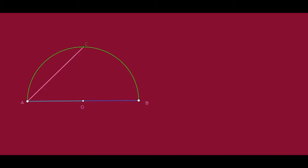A and B are the end points of the diameter, and C is a point on the circle. Now the angle C is a right angle. We want to show that angle C is a right angle.